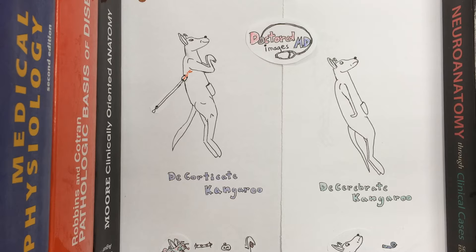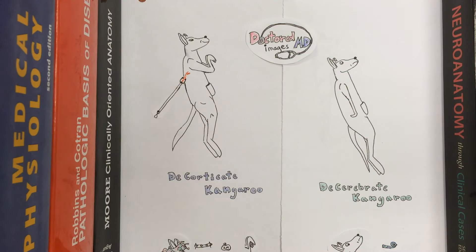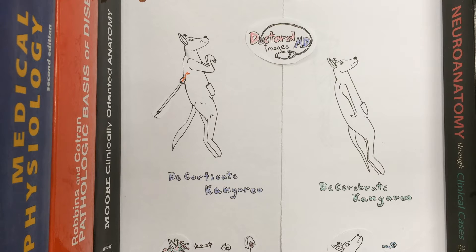Decorticate posture could present in a coma patient when they are provided a painful stimulus, or a patient could simply present in decorticate posture to begin with. The arms in decorticate posturing will be flexed, the wrists will be flexed, and the fists will be clenched. The arms will also be held to the chest. The legs are fully extended with the toes pointed.